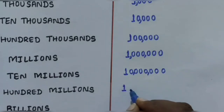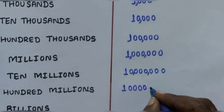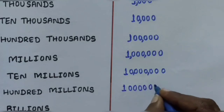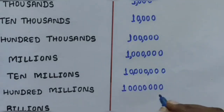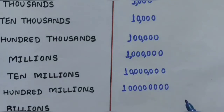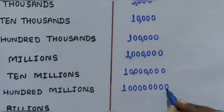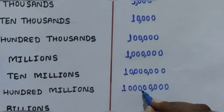Hundred Millions is written as 100,000,000 - one followed by eight zeros. Place values continue as: Thousands, Ten Thousands, Hundred Thousands (first comma), Millions, Ten Millions, Hundred Millions.